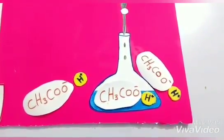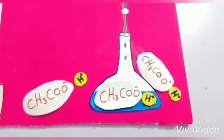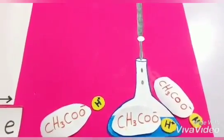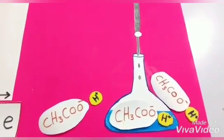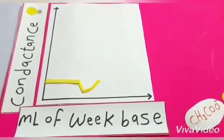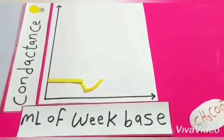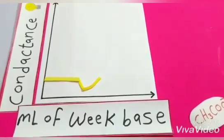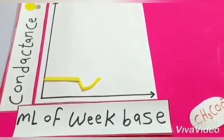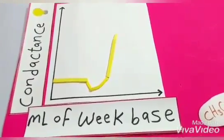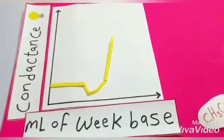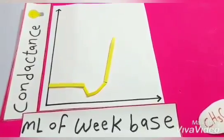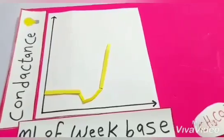With addition of a larger volume of weak base, this leads to increased ionization and so increases the Conductance. The Conductance increases due to the addition of a greater volume of weak base to the solution. After that, when we reach the equivalence point, it becomes part of the curve. Thank you.